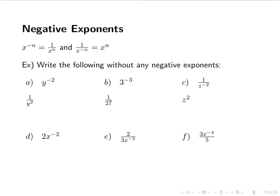2x to the negative 2 — this is where I see a lot of mistakes. That 2 is not being raised to an exponent, so when I flip it, I'm only flipping the x. The 2 stays where it is. So it's still 2, and then 1 over x squared, which becomes 2 over x squared.